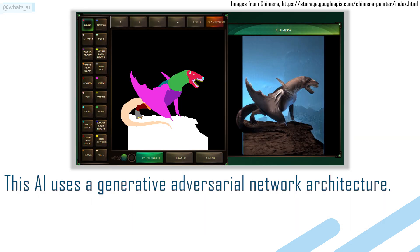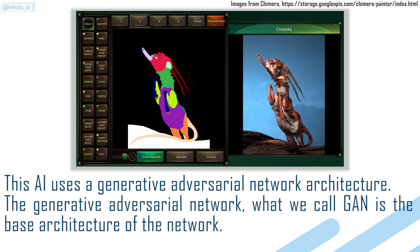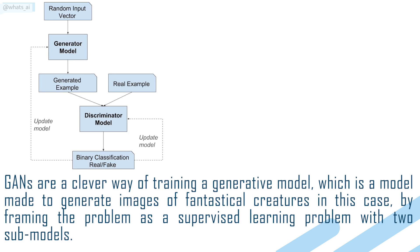This AI uses a Generative Adversarial Network architecture. The Generative Adversarial Network, what we call GAN, is the base architecture of the network. GANs are a clever way of training a Generative Model — which is a model made to generate images of fantastical creatures in this case — by framing the problem as a supervised learning problem with two sub-models.